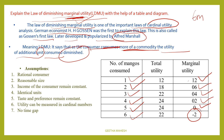If you observe, utility is decreasing. If you consume one extra commodity, utility decreases. The concept of diminishing marginal utility forms the basis of this law.